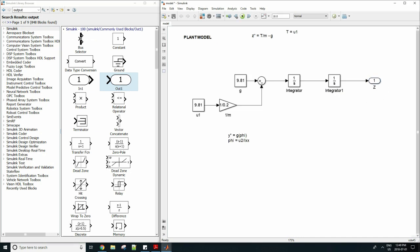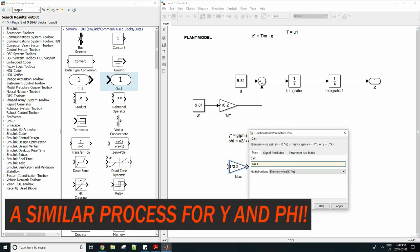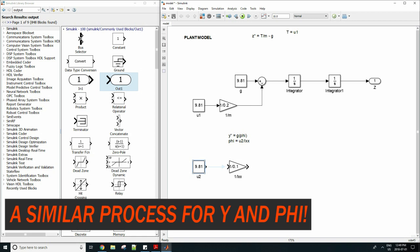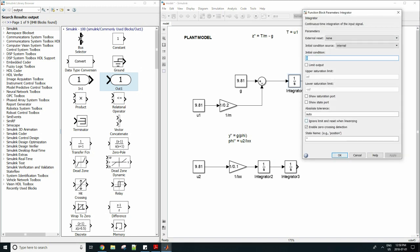So now let's do y double dot and phi. So drag in one over ixx and set that to 0.1 as defined in the statement and u2 so create another input for that which is your moment as defined. Then we can once again perform a double integration to get phi from phi double dot. We can also drag another output block since our phi will be cascaded into y and then fed back as well. So drag in the block.